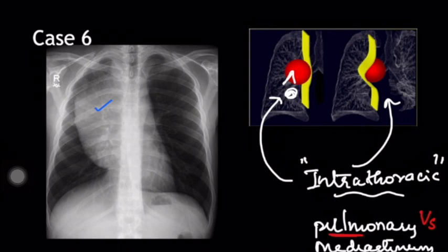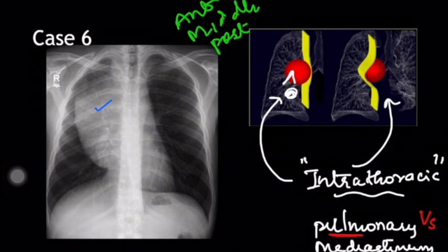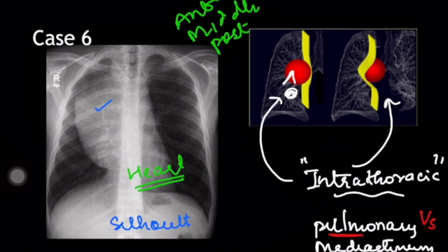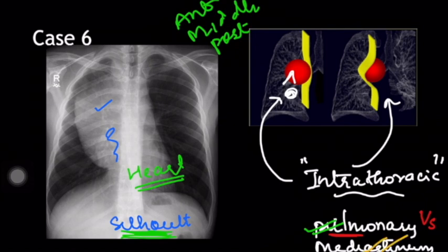Once you have localized this to the mediastinum, you have to further classify whether it belongs to the anterior, middle, or posterior mediastinum. The heart being an anterior mediastinal structure, if you extend the Silhouette sign here, the lesion is obscuring the cardiac border, meaning the lesion is likely to be in the anterior mediastinum. This picture emphasizes that the Silhouette sign can be extended not just to intrapulmonary lesions, but is also applicable to mediastinal lesions as well.